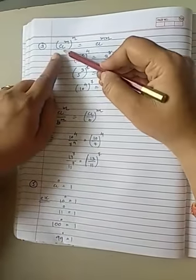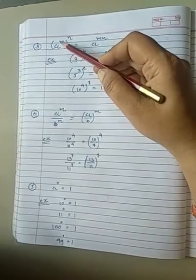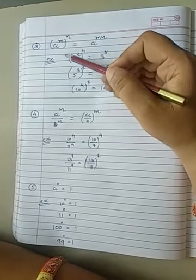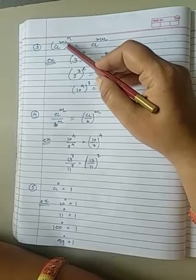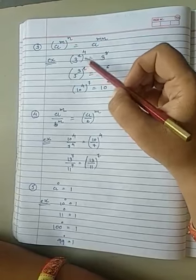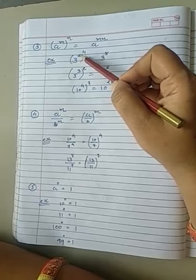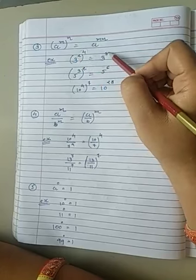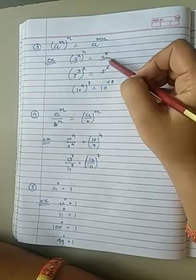Next: a raised to m raised to n. a is base, m is the power and n is power of power. So whenever this happens, power of power, you just multiply both the powers. m and n will multiply. So a raised to m times n. Let us see the example. 3 raised to 2 and raised to 4. 3's power is 2, 2's power is also 4. So multiply both these powers. 4 times 2 is 8. 3 will remain as it is. Just multiply both powers. So 3 raised to 8.